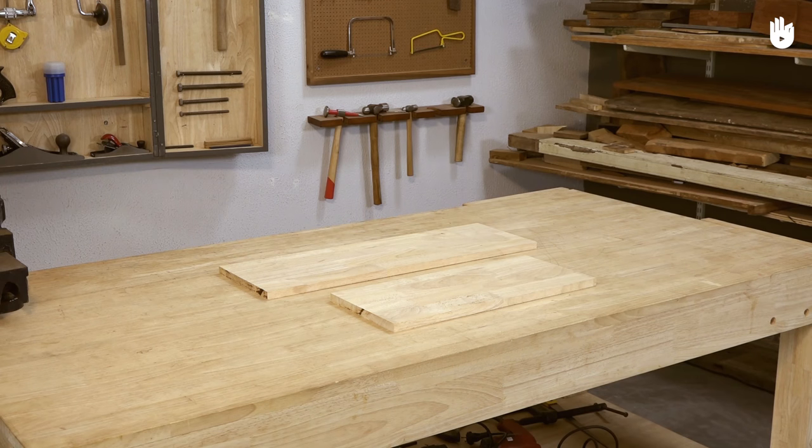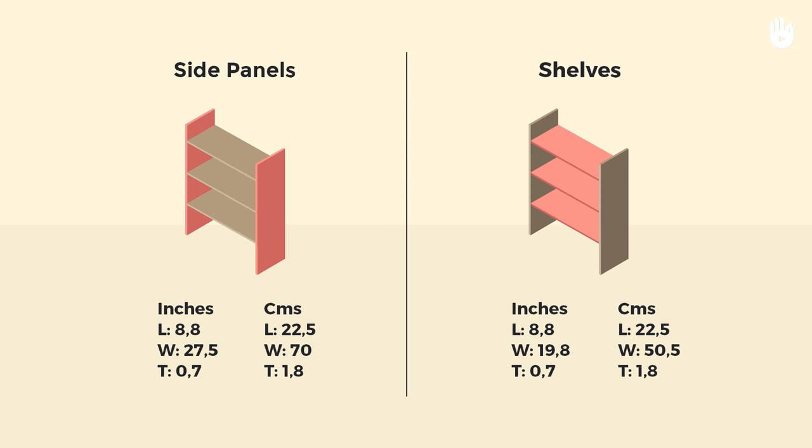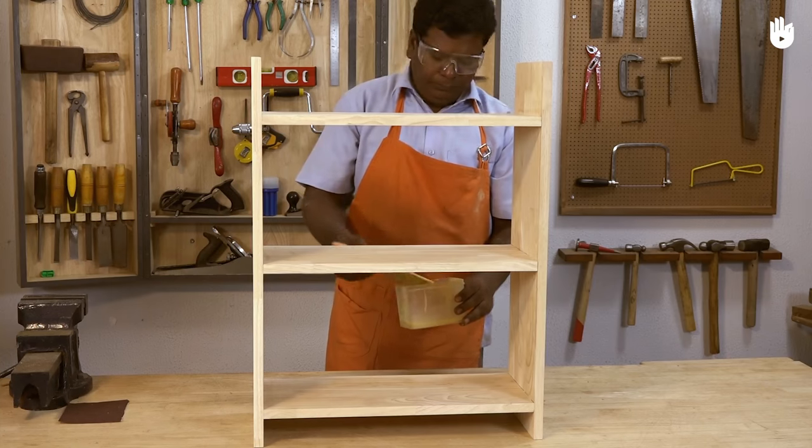The materials you will need are two pieces for the side panels of the dimensions 22.5 x 70 x 1.8 cm, and three pieces for the shelves of the dimensions 22.5 x 50.5 x 1.8 cm. You will also need adhesive, sealer, and thinner.